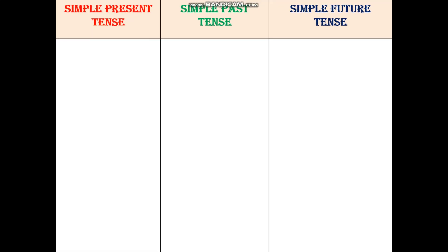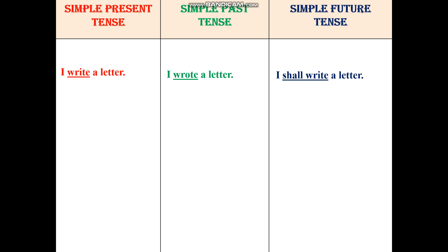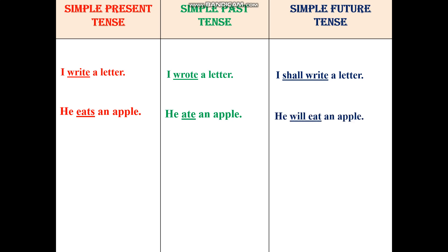Let's take up the comparative examples of simple present, past and future tenses. We see three columns. First example of simple present tense: I write a letter. Simple past tense: I wrote a letter. Simple future tense: I shall write a letter. He eats an apple. He ate an apple. He will eat an apple.